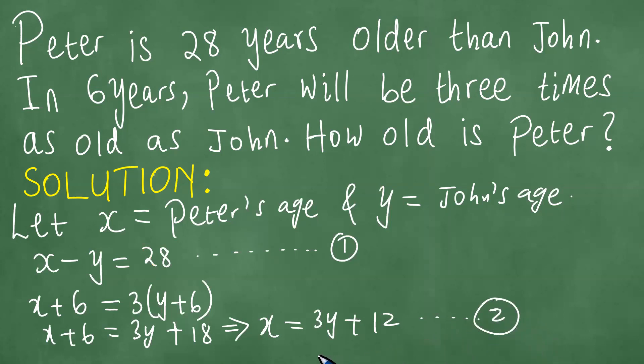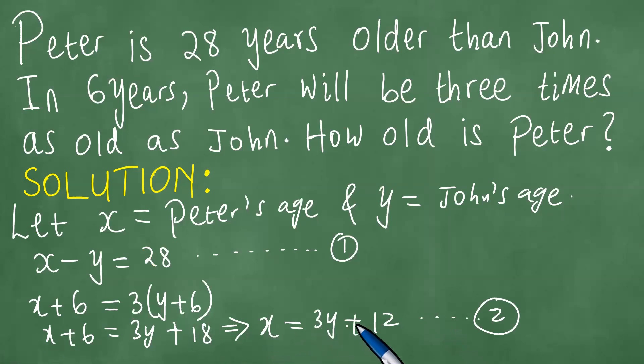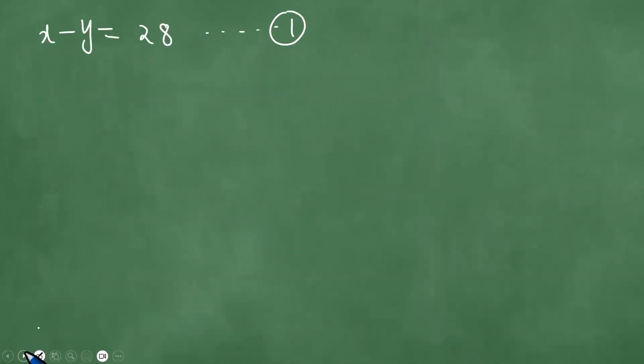We have these two equations and we proceed. So x minus y equals 28, equation 1. And we have also this other equation x equals 3y plus 12, equation 2.